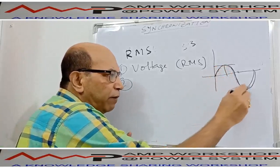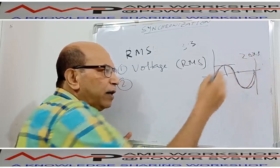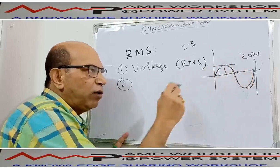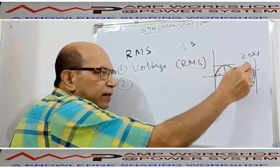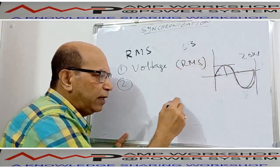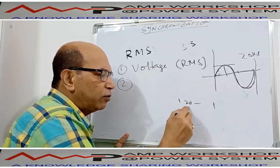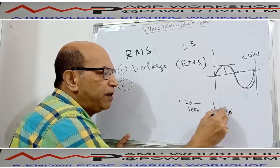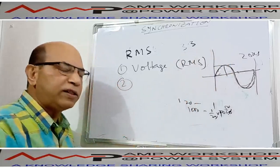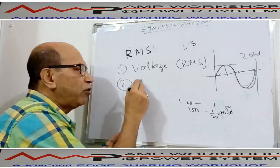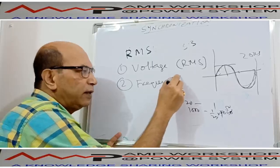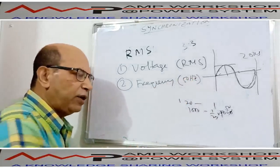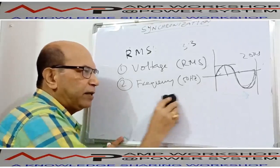The RMS voltage is the first parameter. For example, if a generator has a voltage of 3.3 kV, that means between any two phases — A and B, B and C, or C and A — the RMS value is 3.3 kV. Or it could be 415 volts between phases; that RMS value is the first parameter. The second parameter is frequency. One complete waveform takes 20 milliseconds, meaning 50 Hz — since one second divided by 20 milliseconds gives 50 cycles per second. Frequency is either 50 Hz or 60 Hz — this is another parameter of the voltage.